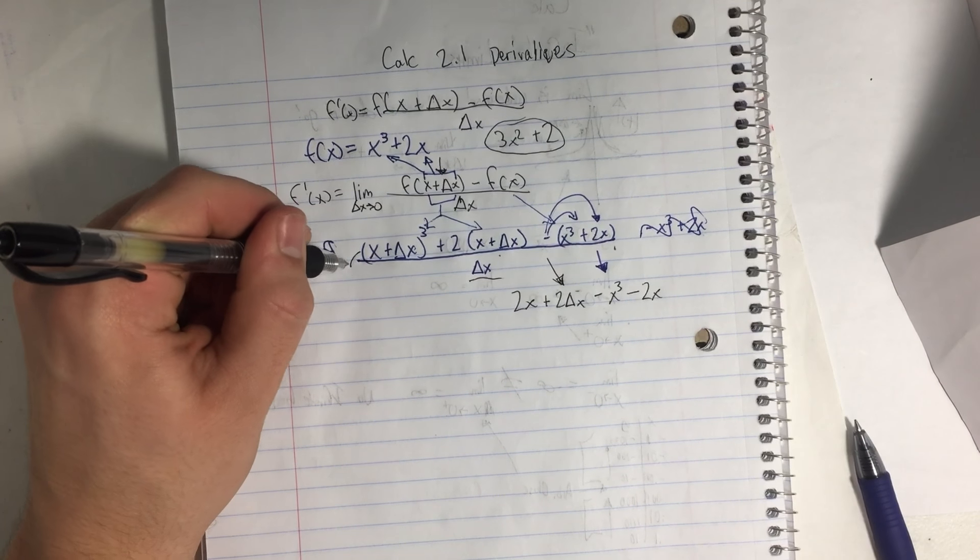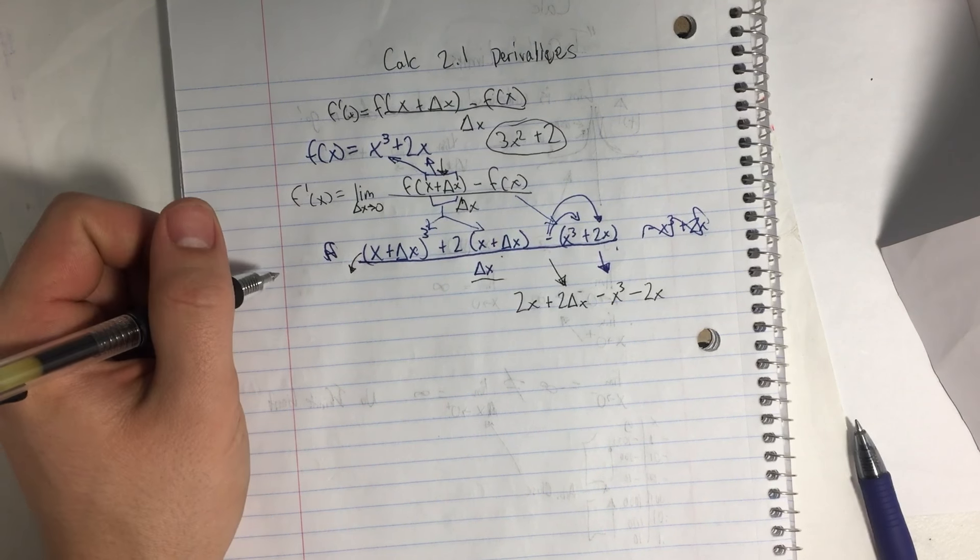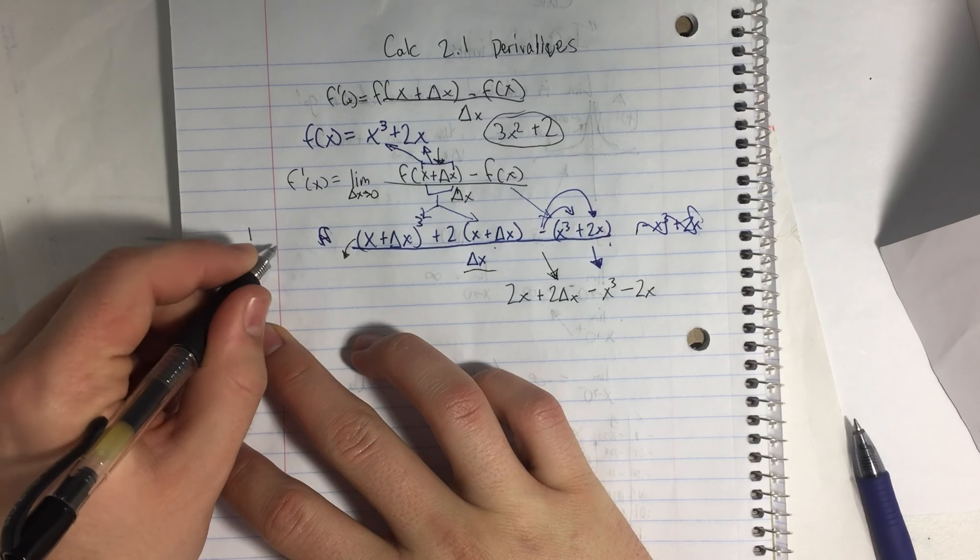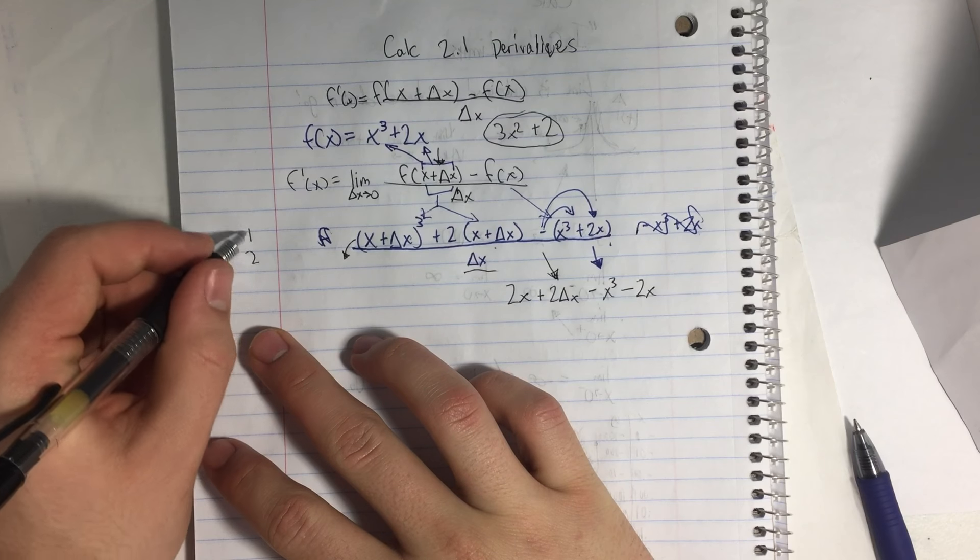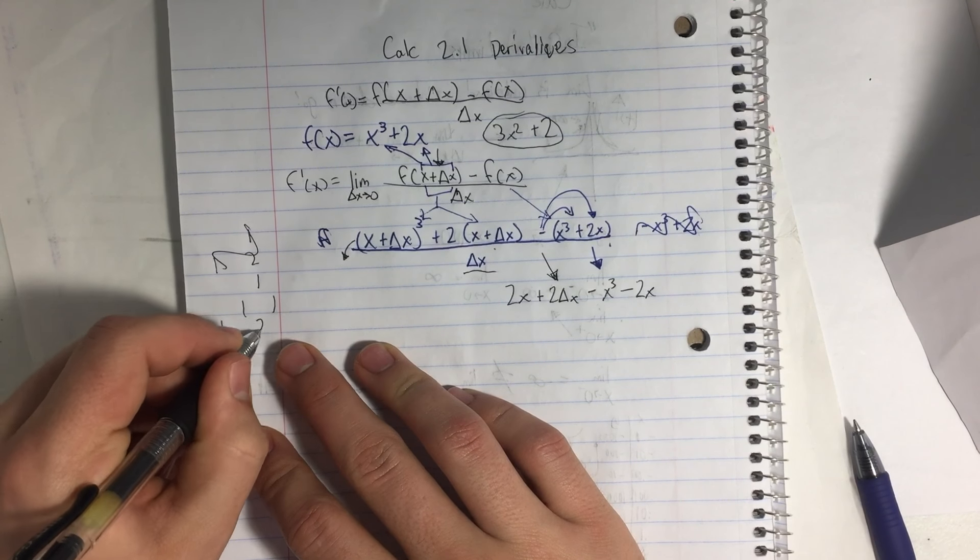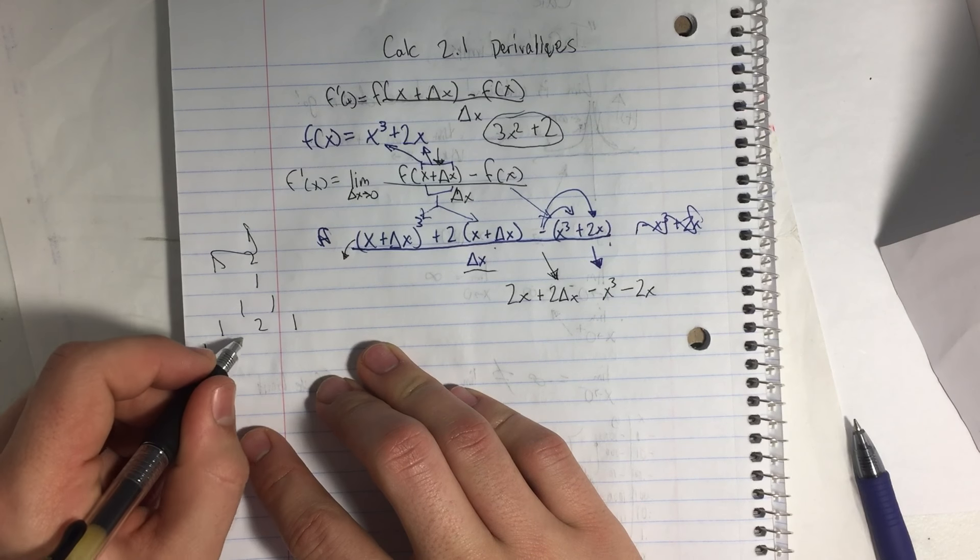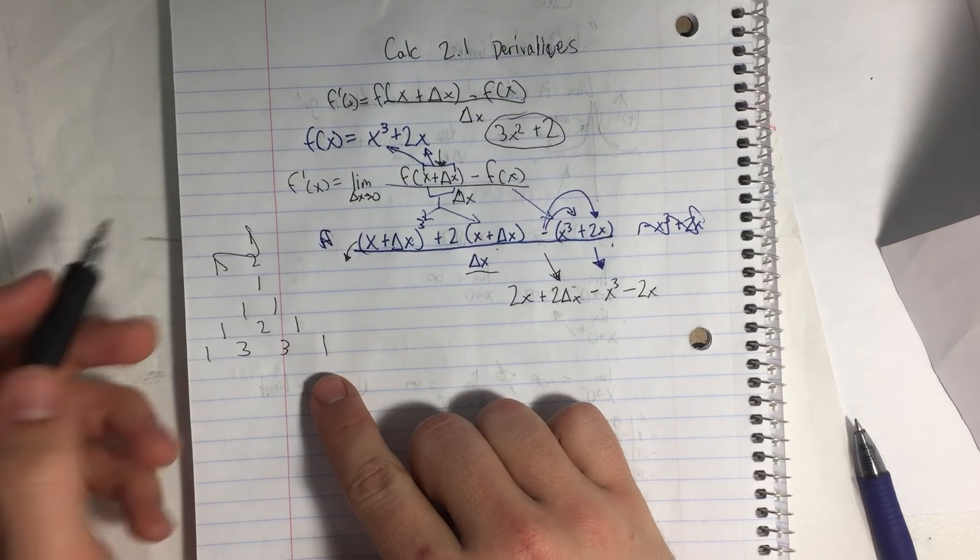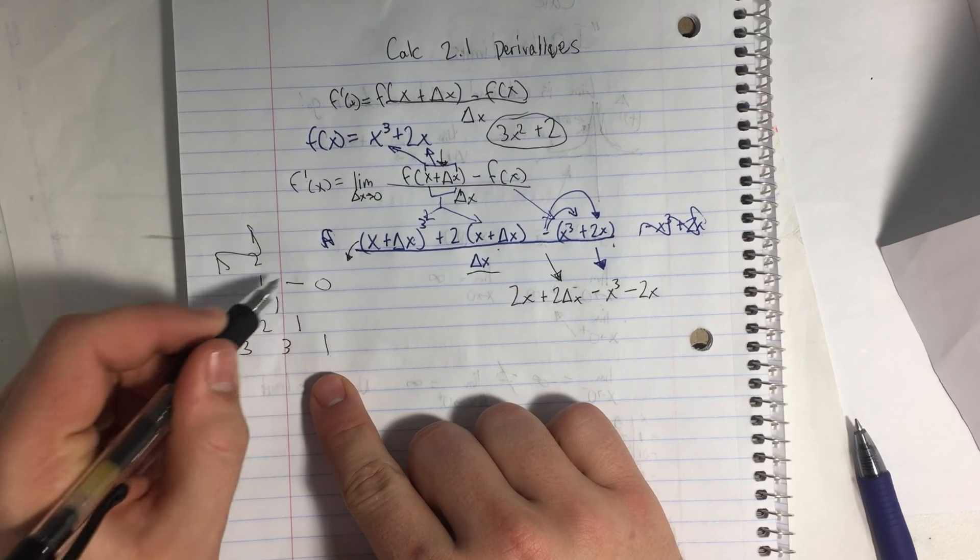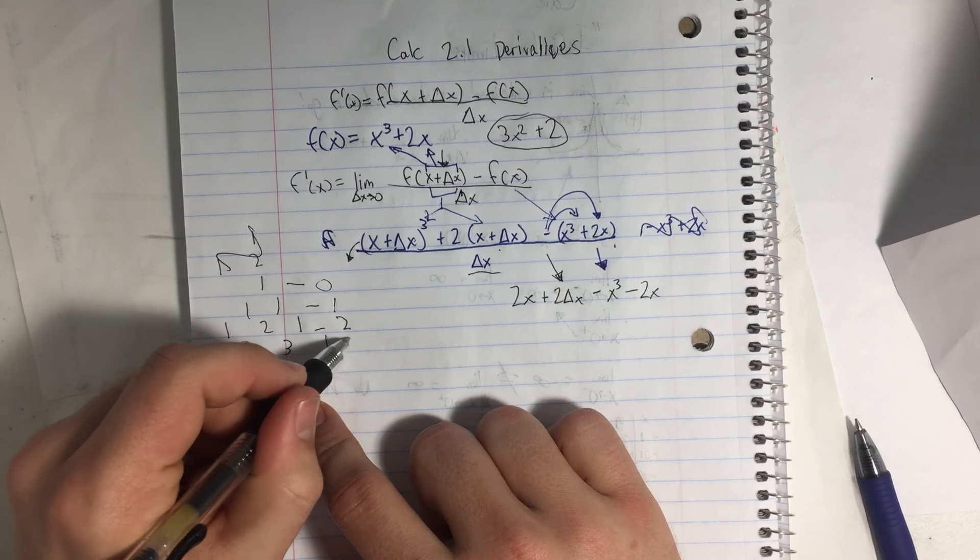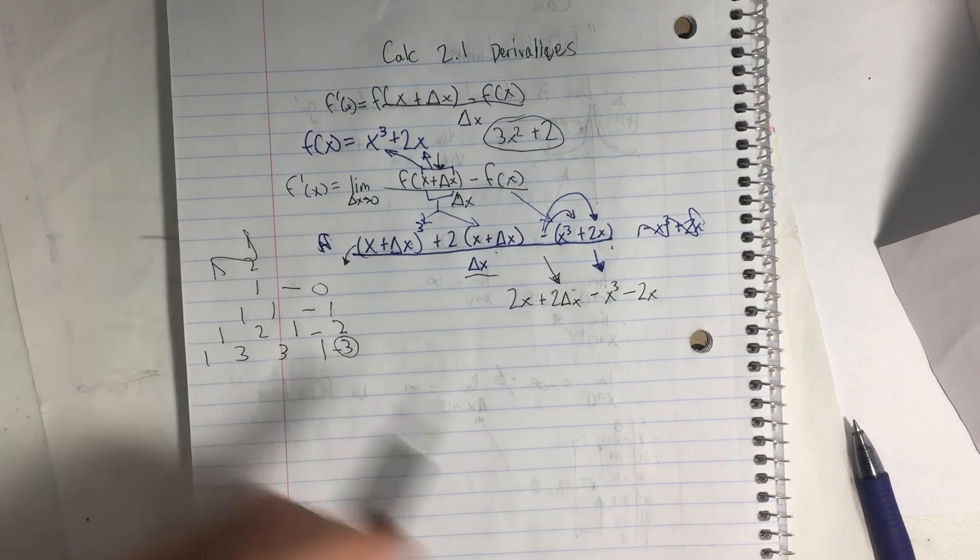But now we need a cubic of this, which you're like, oh no. So what we're going to do is remember Pascal's triangle. So, oops, I did it wrong. 1, 1, 1, 1, 2, 1, 1, 3, 3, 1. Okay. This is as far as Pascal's triangle we need. So this is to the 0 power. This is to the 1st power. This is to the 2nd power. And this is to the 3rd power. This is what we're going to need.